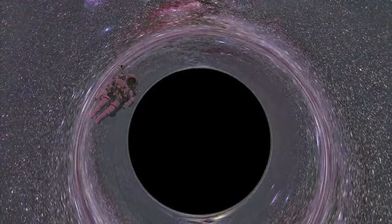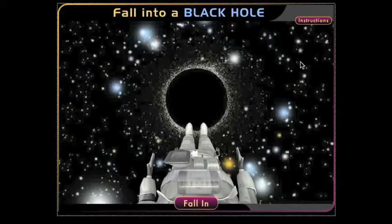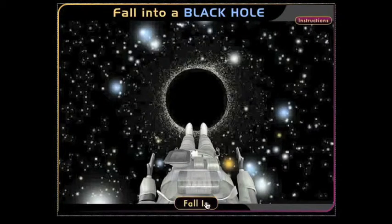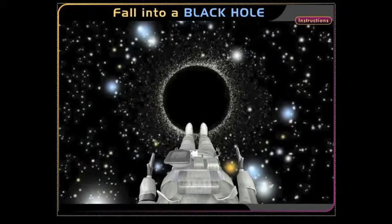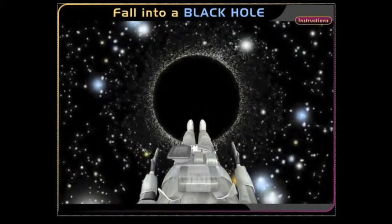Your body will seem increasingly redshifted until you simply fade away. What if you actually fell into a black hole? The closer you get to the singularity, the greater the difference in gravitational pull. The bottom part of you will get sucked in faster than the upper part, and you'll get stretched out more and more. This process is called spaghettification. By now you would be dead — your molecules stretched apart — and you would get sucked further and further into the singularity. When you reach the singularity, well, that's the thing: scientists don't really know what happens.